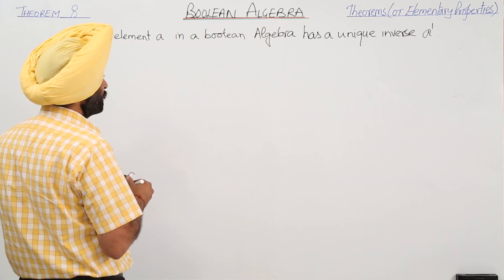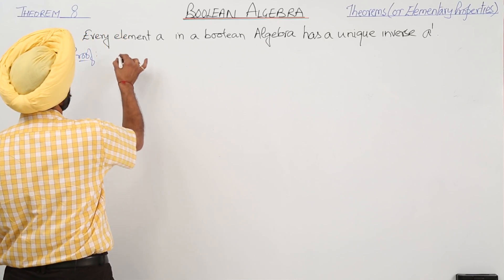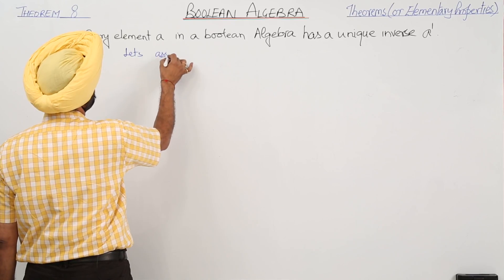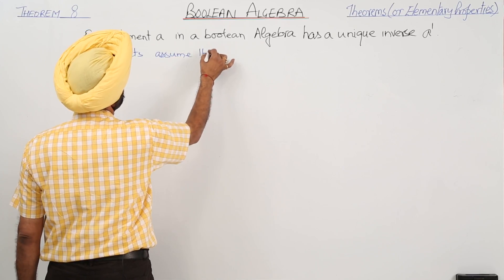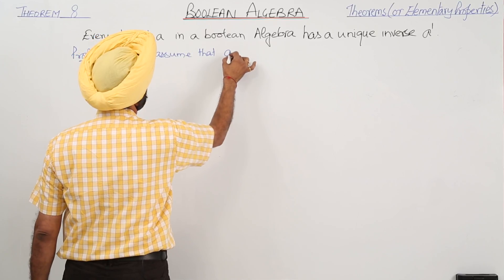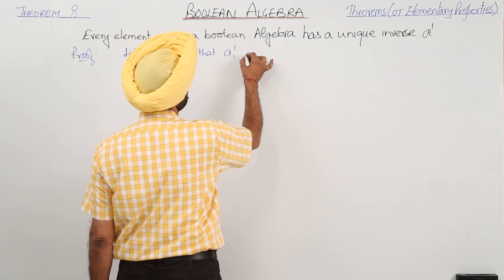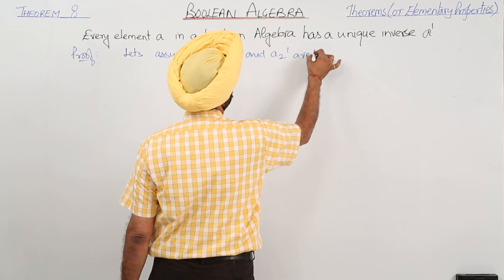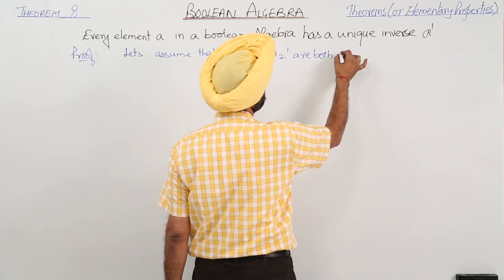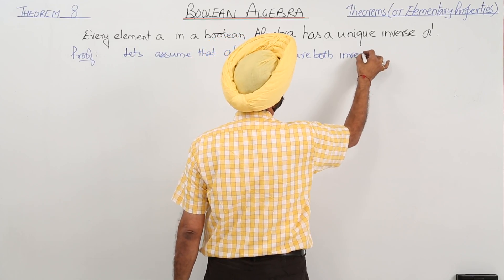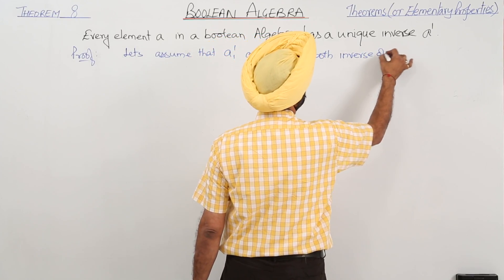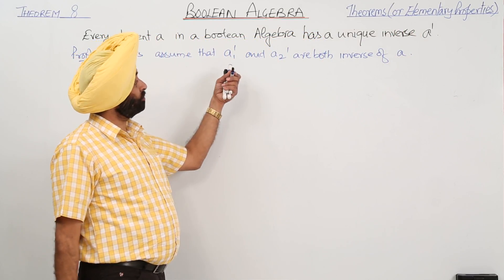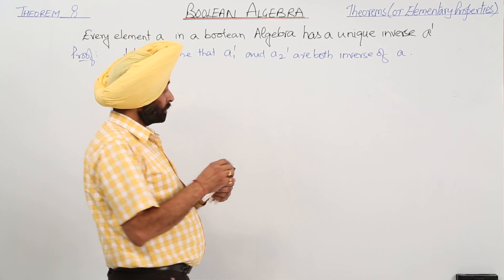For proving this one, let's assume something. Let's assume that A1 inverse and A2 inverse are both inverses of A. So we have supposed A1 inverse and A2 inverse are both inverse for A.